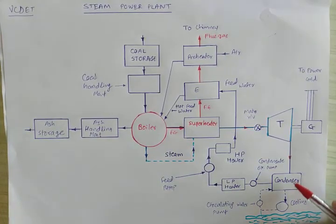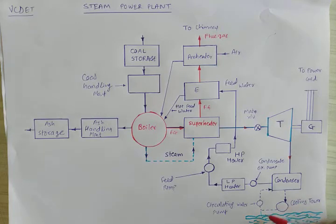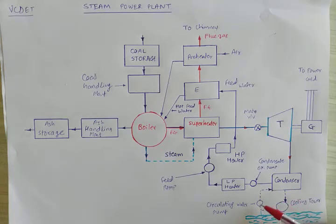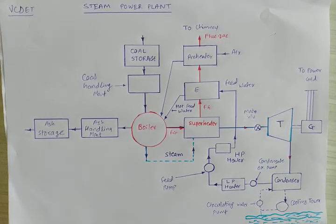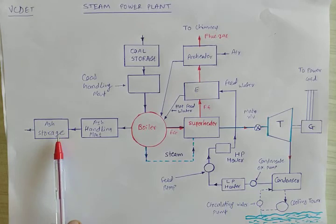Whatever steam is condensed in the condenser is handled using the cooling tower to maintain low pressure. The cooling tower takes water from the river. That cold water becomes hot due to heat exchange from the steam, and is then recirculated from the cooling tower back to the condenser. Whatever ash remains is forwarded to the ash handling plant and then to ash storage.